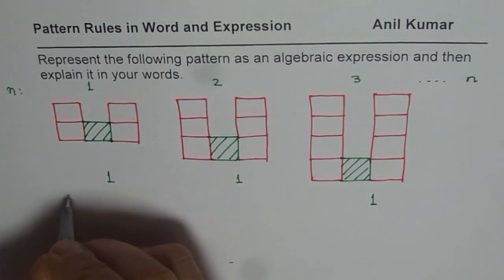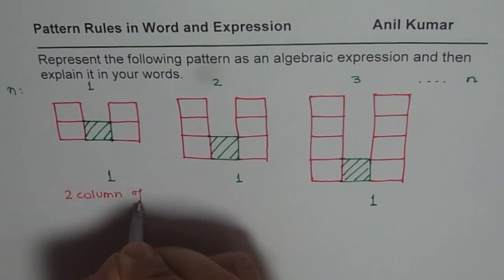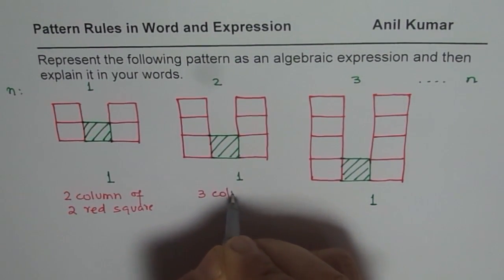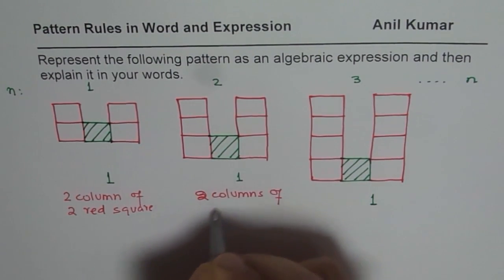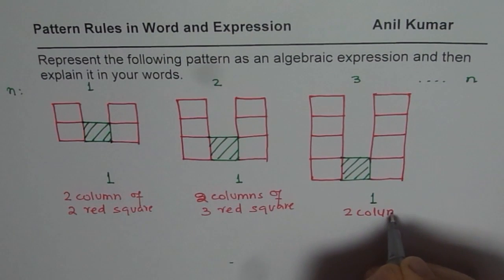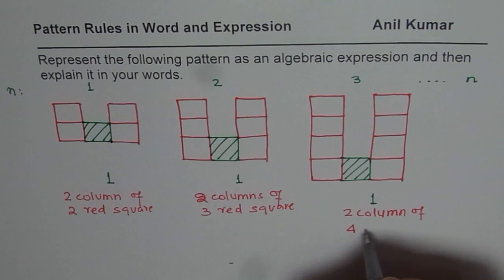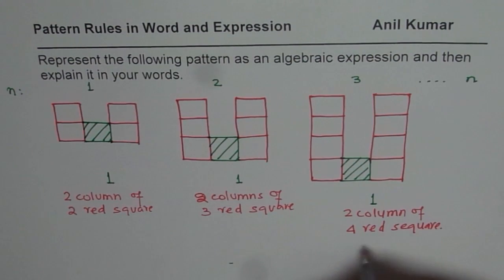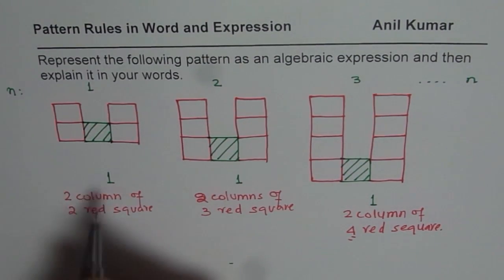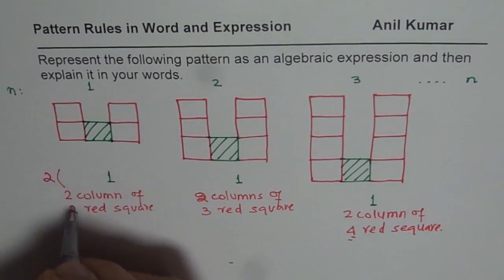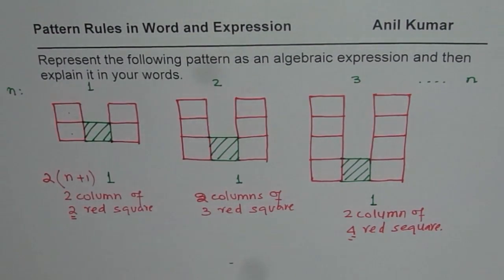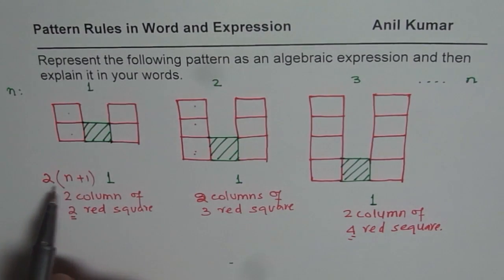Do you see that? We have two columns of two red squares in pattern one. Here we have two columns of three red squares. And here again, two columns is fixed — two columns of four red squares this time. So the number of red squares in each column is one more than the figure number: three is two plus one. So we can write an algebraic expression — two columns means times two, and the number of red squares per column can be written as n plus one.